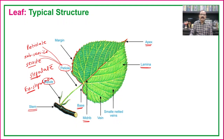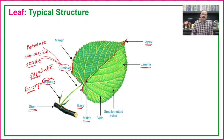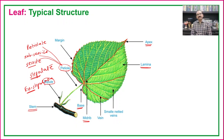The midrib runs from the base of the petiole to the apex. In some leaves there is a presence of a single midrib; in some leaves there are many midribs. On the basis of presence of a single midrib or many midribs, there are different types of venation, which we will see in the venation section.